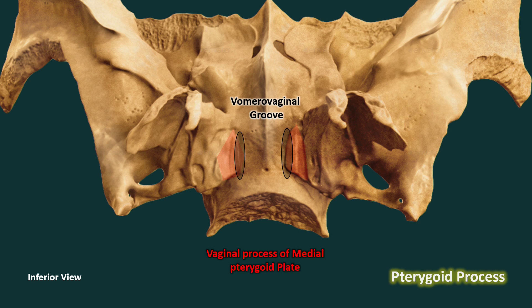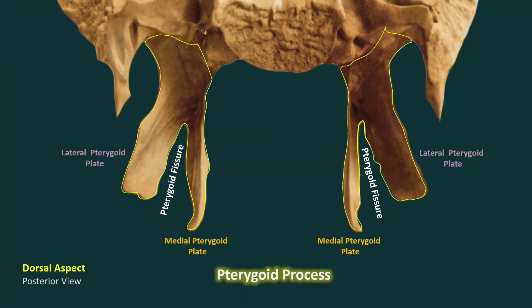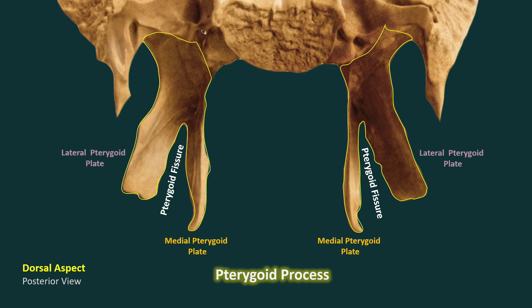On the posterior side, the pterygoid plate encloses a V-shaped interval known as the pterygoid fossa. Over here we have a palatovaginal canal that connects the pterygoid fossa to the nasopharynx. This fossa faces posteriorly and contains the medial pterygoid muscle.